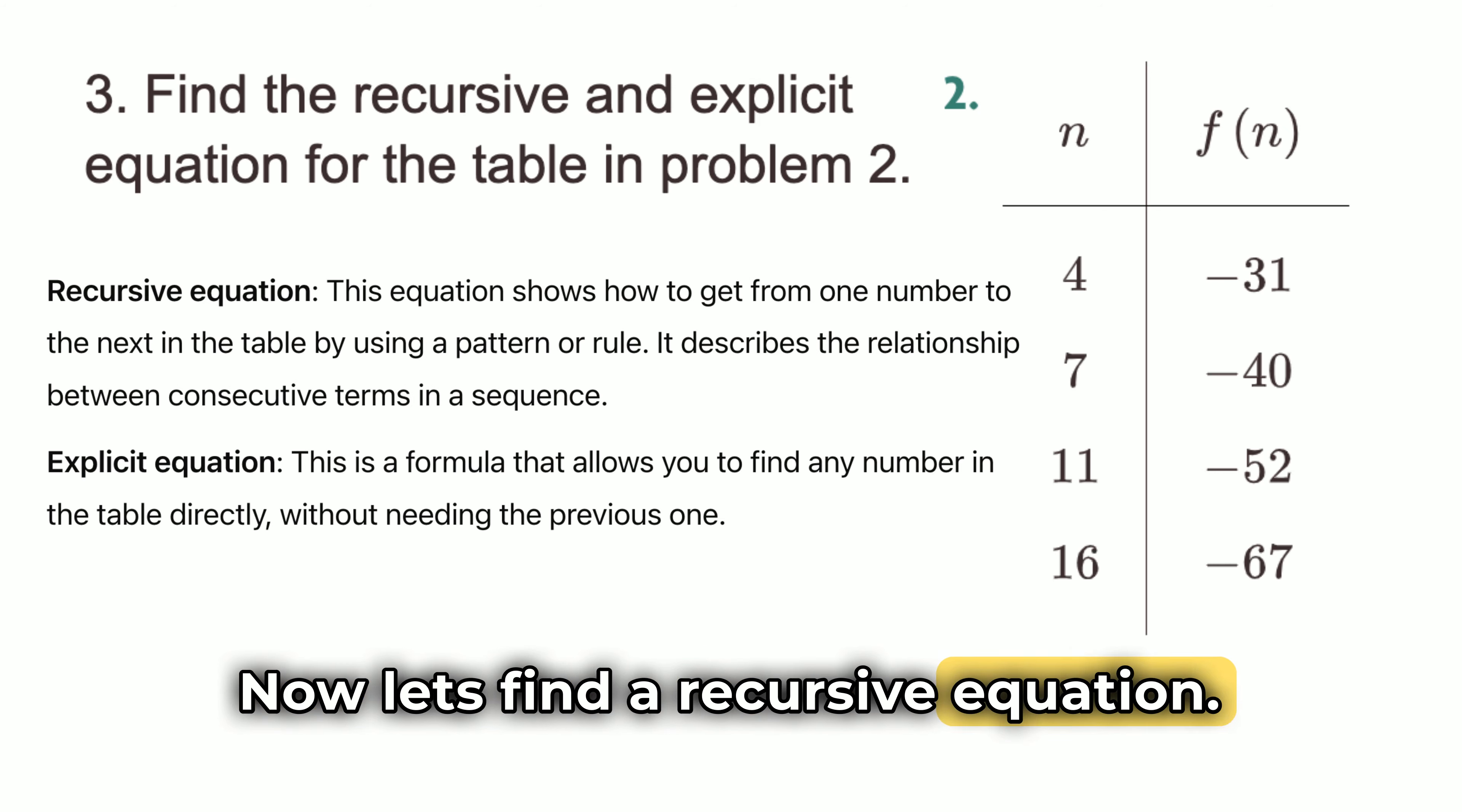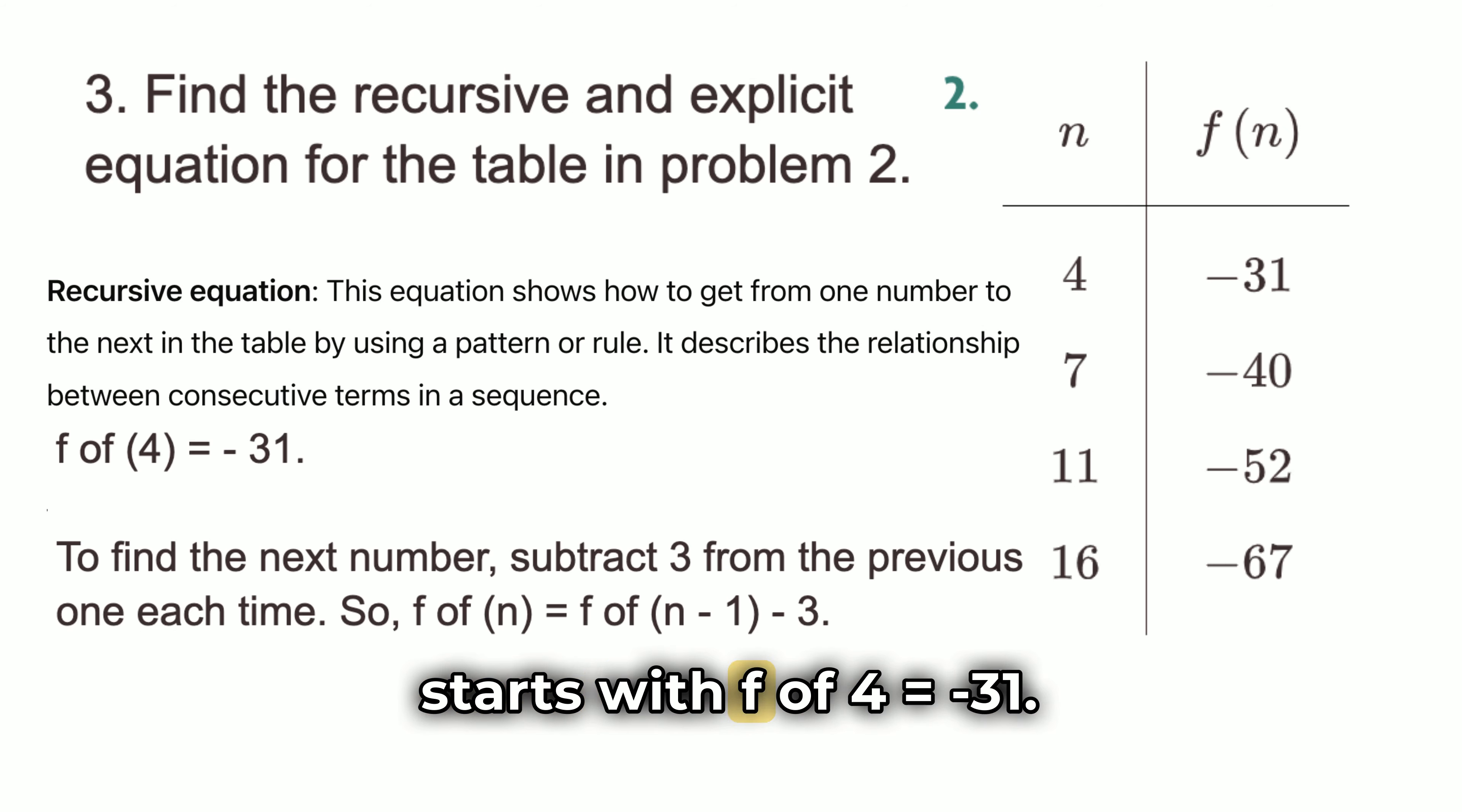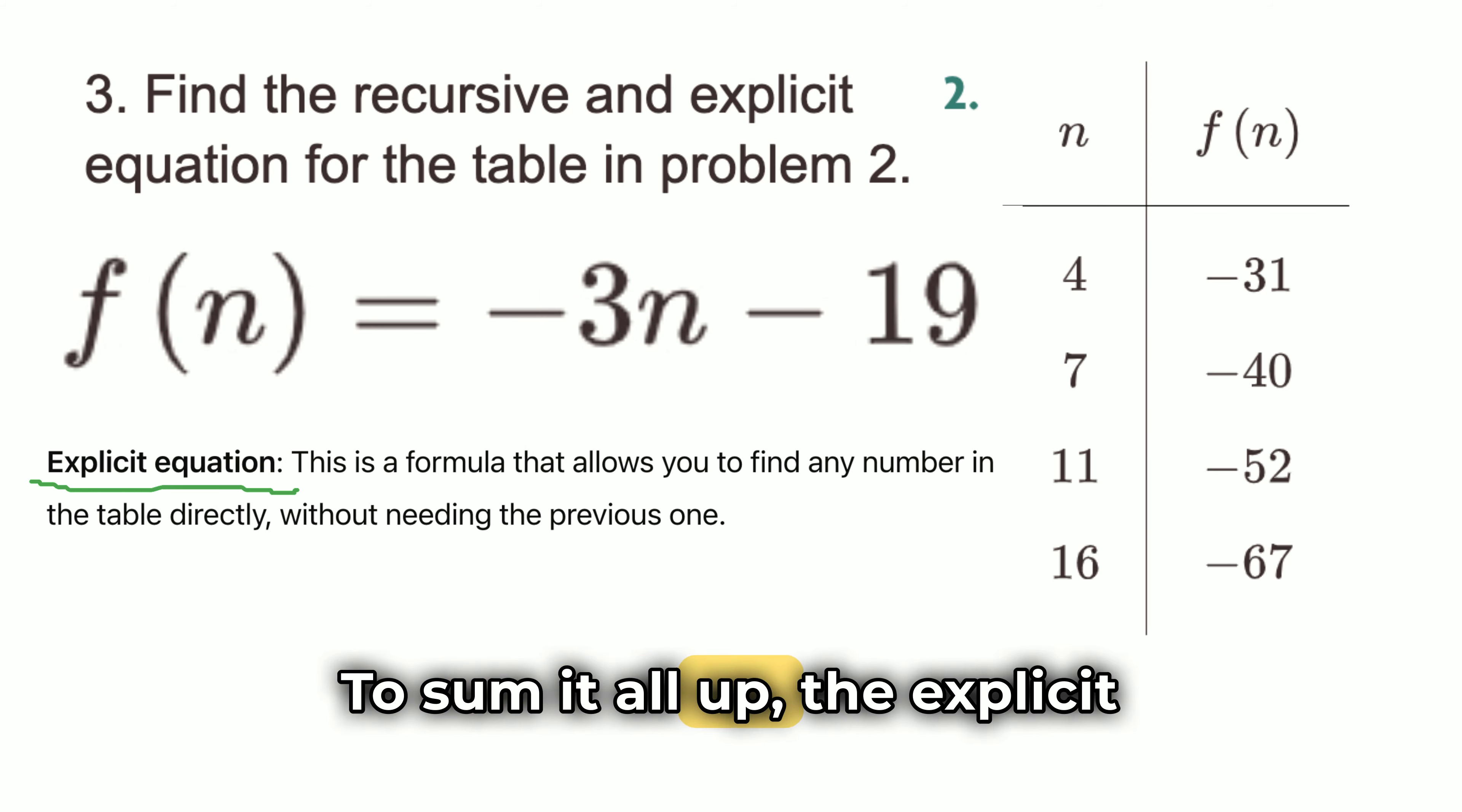Now, let's find the recursive equation. In this form, you use the previous value to find the next one. We already know that each number goes down by 3 more than the last one. So, the recursive equation starts with f of 4 equals negative 31. To find the next number, subtract 3 from the previous one each time. So, f of n equals f of n minus 1 minus 3.